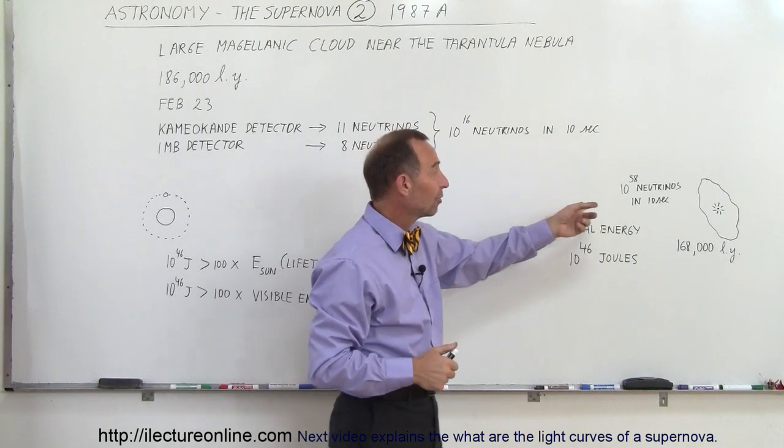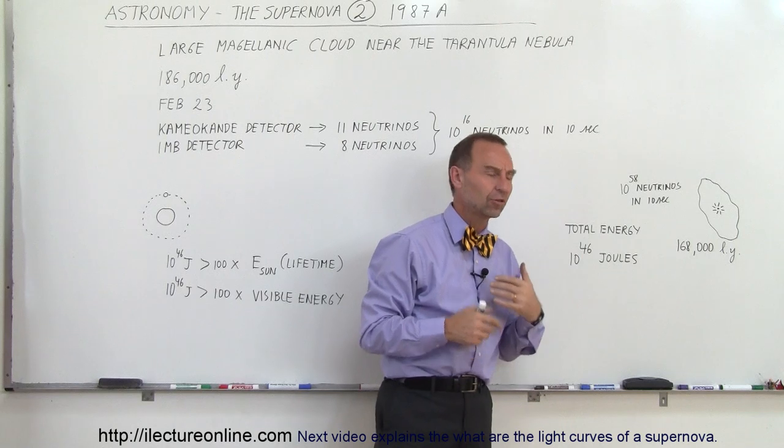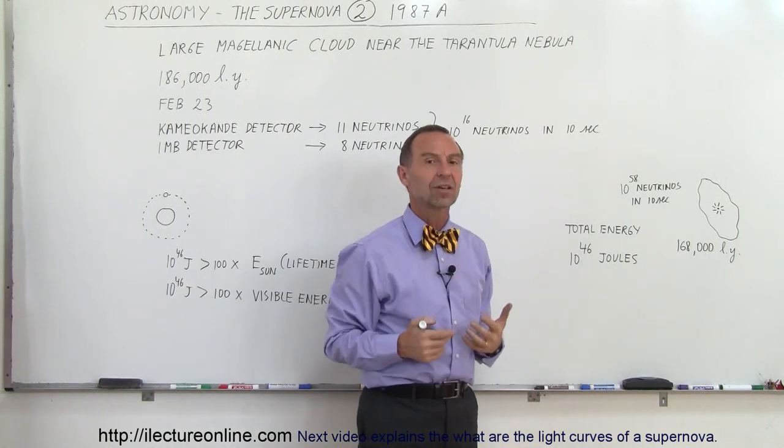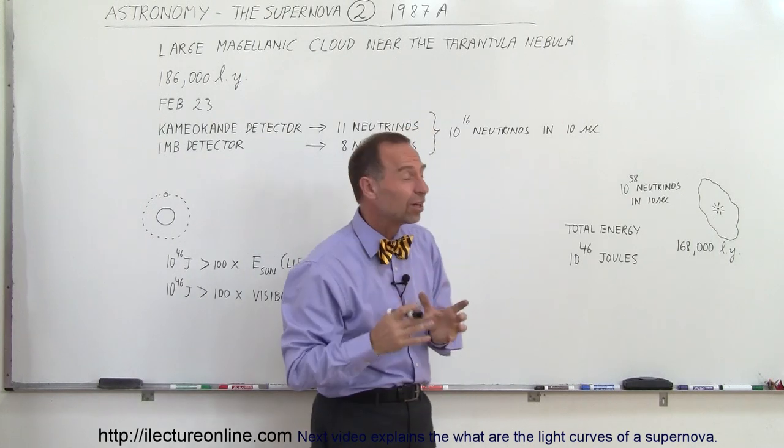The estimation was that about 10 to the 58 neutrinos would have been expelled from that supernova explosion in a 10-second period. 10 to the 58 neutrinos, that's an enormous quantity of neutrinos.